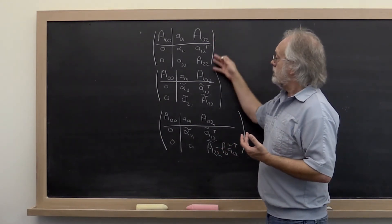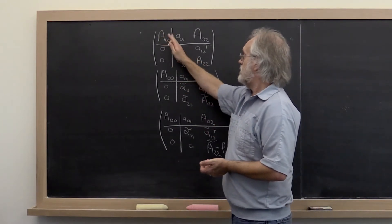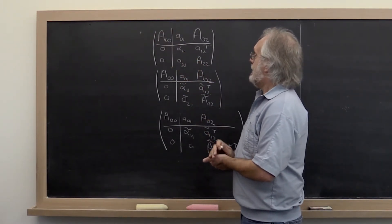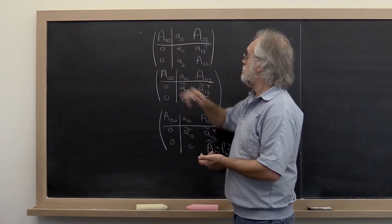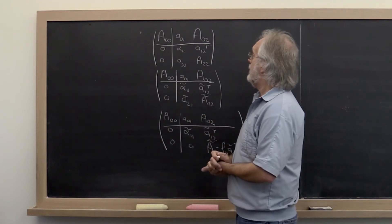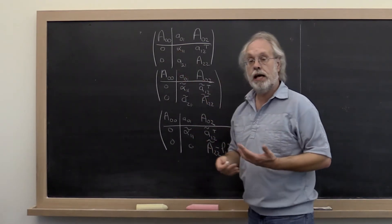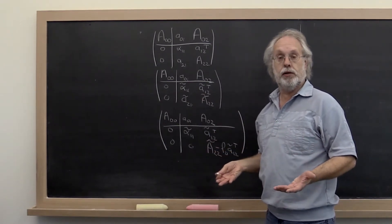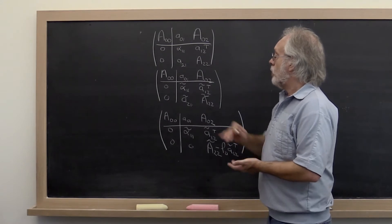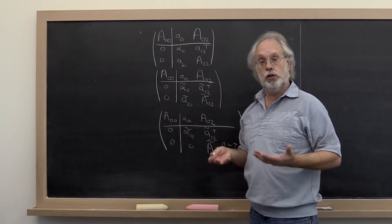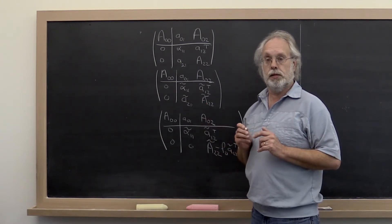Let's say that we've gotten to this point in the algorithm where we've already processed the first columns. Now we're going to work with the current column. We've introduced zeros below the diagonal to the left of this line. And if alpha_11 is equal to zero, we clearly have a problem because we'll end up dividing by zero. But already if alpha_11 is small in magnitude, we have a problem.